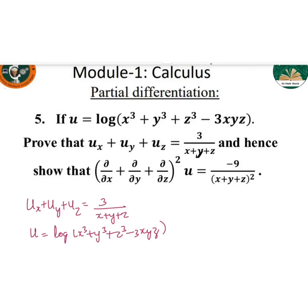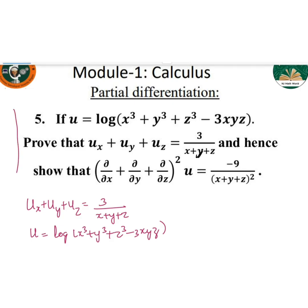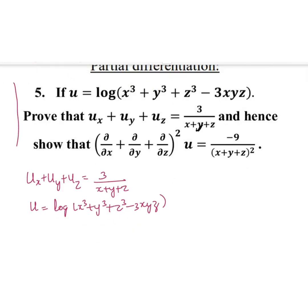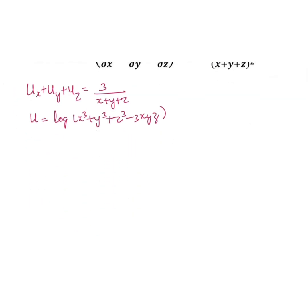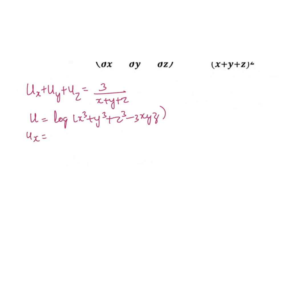We need to prove that u_x + u_y + u_z equals 3 divided by (x + y + z). Let us take u and partially differentiate with respect to x, y, and z. The partial derivative of u with respect to x will be u_x, and the differentiation of log gives 1 by x.